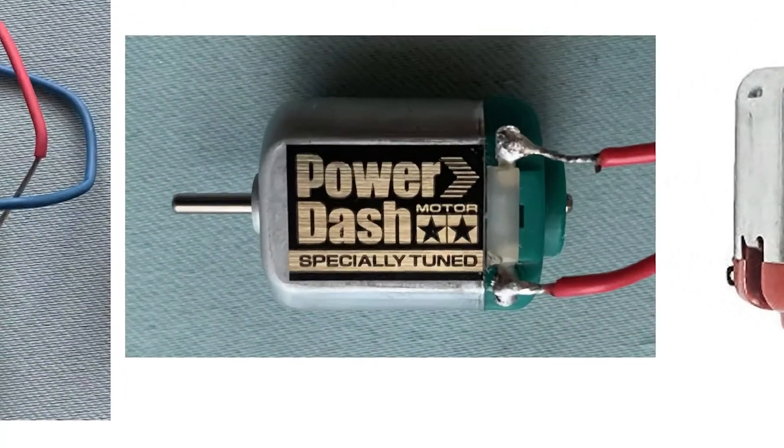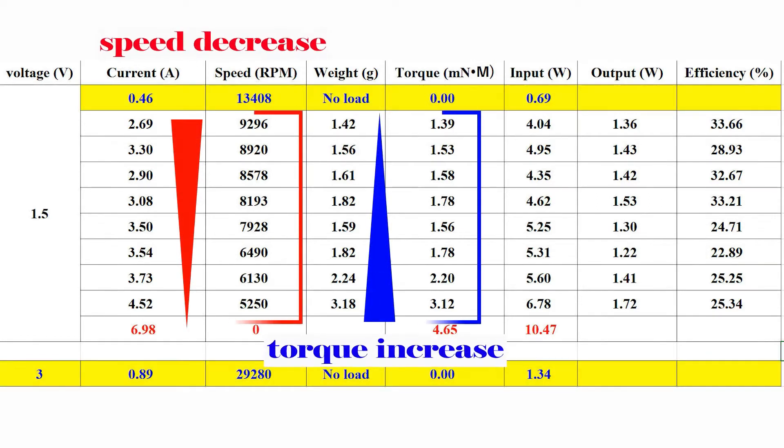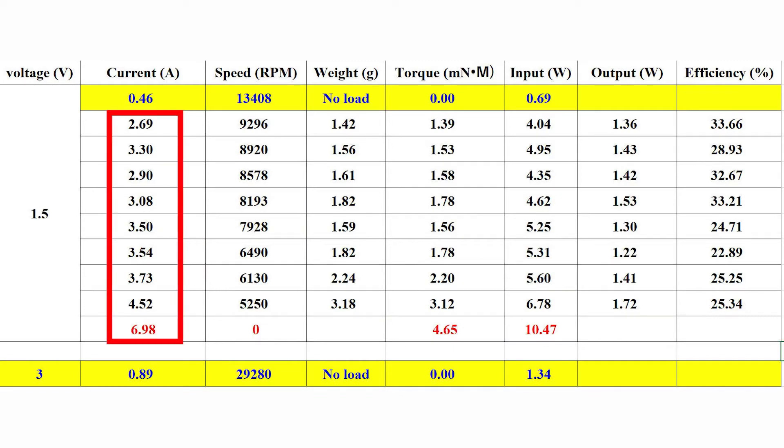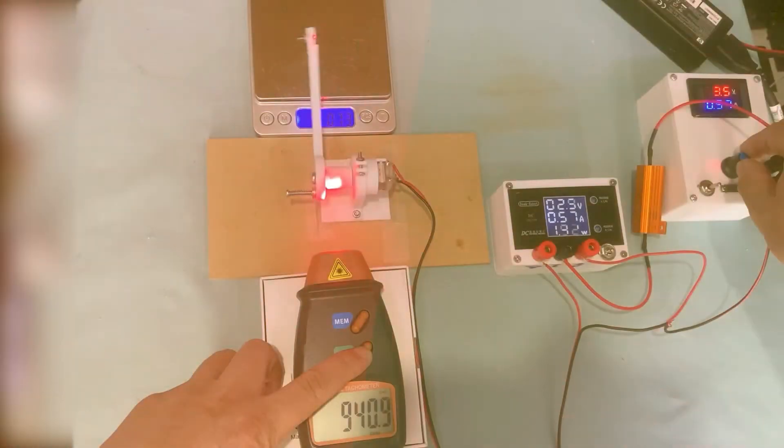I used the Power-DC motor to do a similar experiment. The result is shown here. The motor can work in 1.5V to 3.0V. I did the experiment at 1.5V which I can compare with my BG DC 130 motor. When speed decreases, the torque increases as expected. When I tried to measure the stall current and stall torque, the current became higher and higher and the motor became hotter and hotter. It has a high risk to destroy the motor.